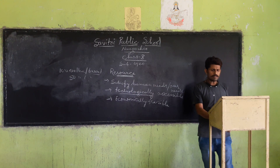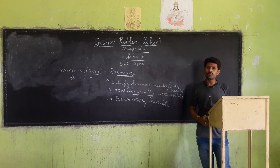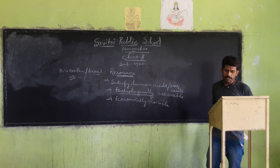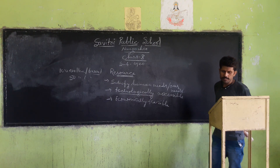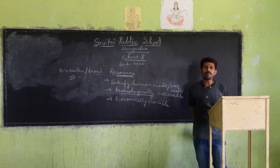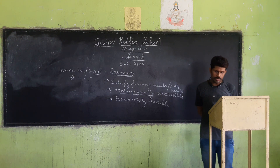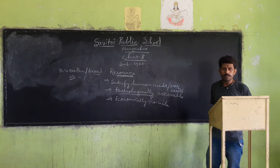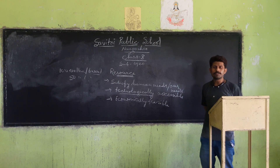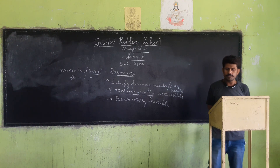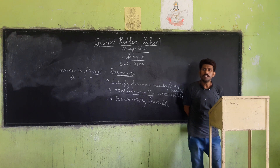There are different bases on which resources can be classified. First one is on the basis of origin, second one is on the basis of exhaustibility, third one is on the basis of ownership, and fourth one is on the basis of status or environment.